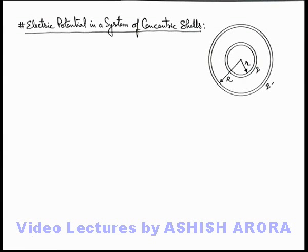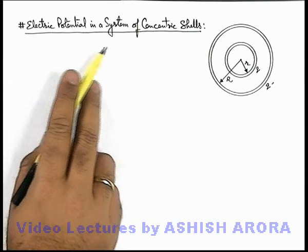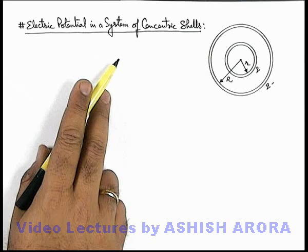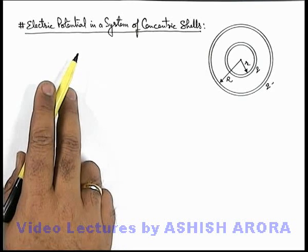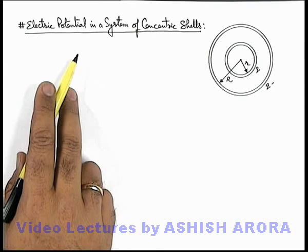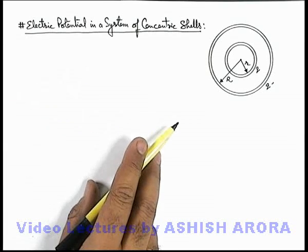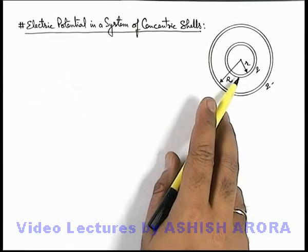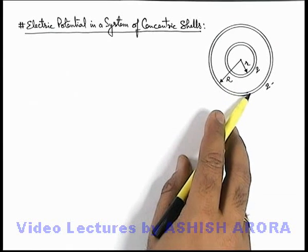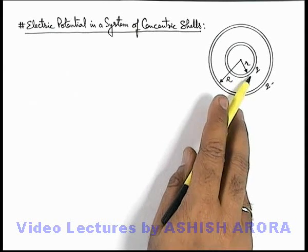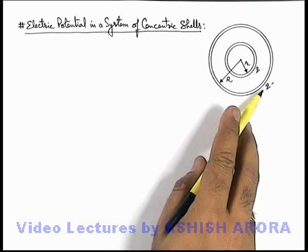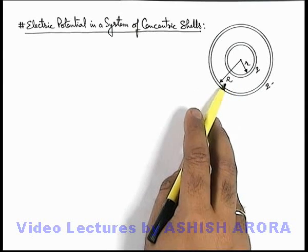Let us study an important concept on electric potential — the calculation of electric potential in a system of concentric shells. This is basically an application of electric potential due to a hollow metal sphere or hollow concentric spherical shells, which we already studied in the previous section. In this figure, we are given two concentric shells uniformly charged with charges q and q dash. The inner shell is of radius r and the outer shell is of radius capital R.